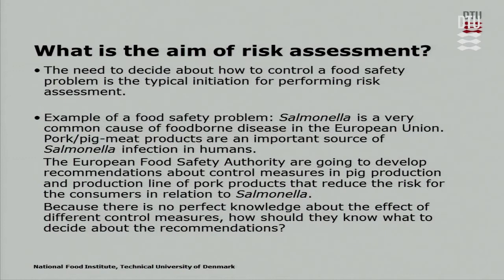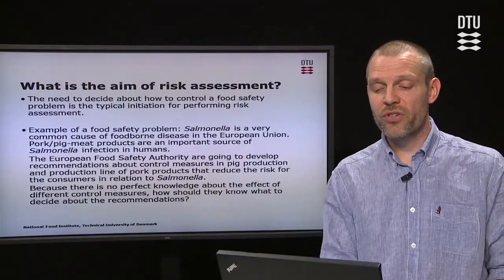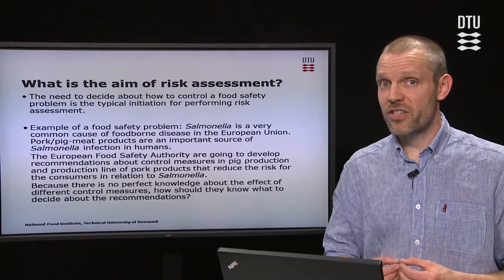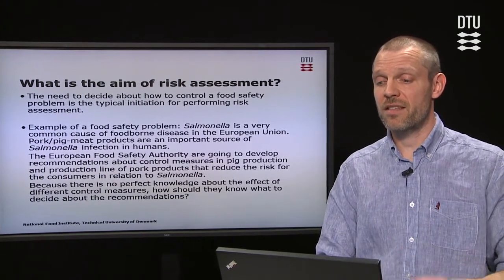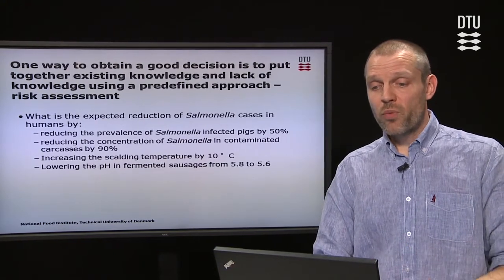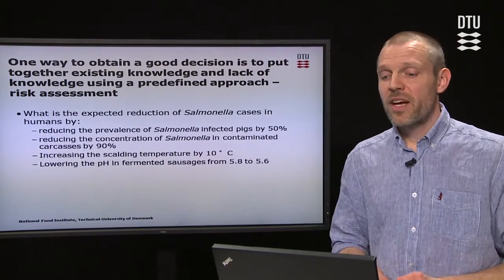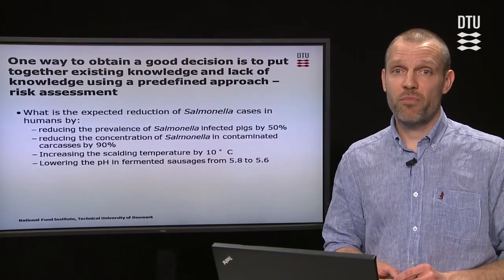The European Food Safety Authority, EFSA, is going to develop recommendations about control measures in pig production and the pork product production line that reduce the risk for consumers in relation to Salmonella. But because there is no perfect knowledge about the effects of these different control measures, the aim is to have some support to the decision. And that is where risk assessment makes its role — putting together existing knowledge, but also the lack of knowledge, using a predefined approach.